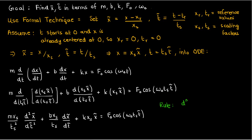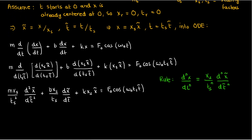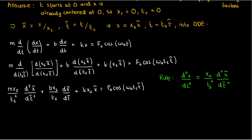You could make a general rule based on this: the nth derivative of x with respect to t in dimensionless form becomes (xₛ/tₛⁿ) times the nth derivative of x̃ with respect to t̃, where x̃ and t̃ are the dimensionless variables.